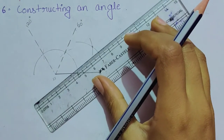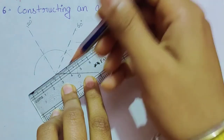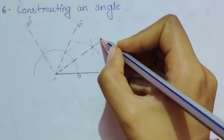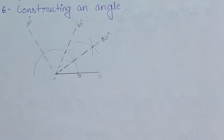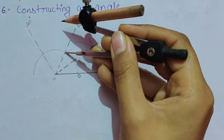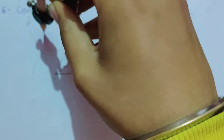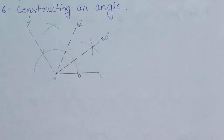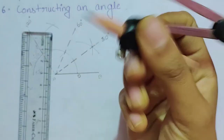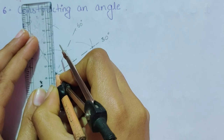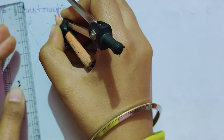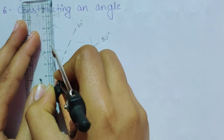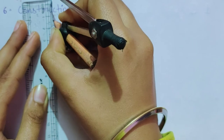To construct 90 degrees, draw an arc on the compass at the angle point, then from the arc intersection cut a previous arc. Join the two intersection points using a ruler — this perpendicular line gives 90 degrees. Make sure the line passes through the correct center point where the arcs intersect.